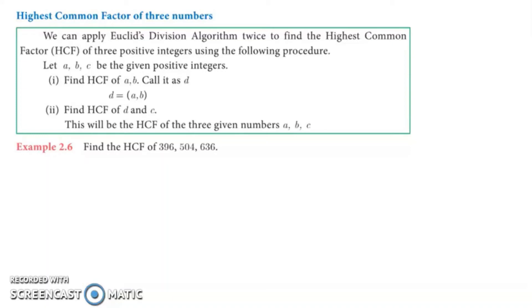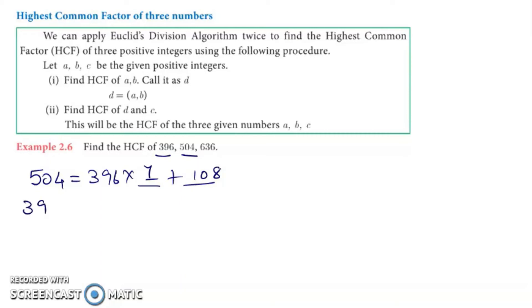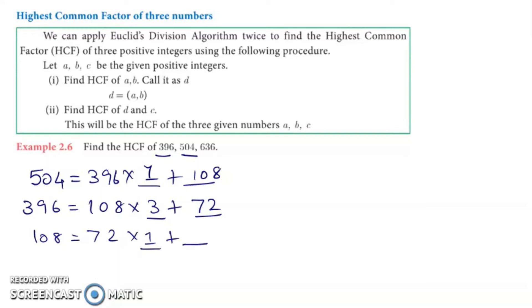Let's take the numbers 504 and 396. We say 504 equals 396 times 1 plus 108. So the remainder is 108. Repeat the process: 396 equals 108 times 3 plus 72. Next: 108 equals 72 times 1 plus 36. Then: 72 equals 36 times 2 plus 0. Since the remainder is 0, the HCF of 504 and 396 is 36.